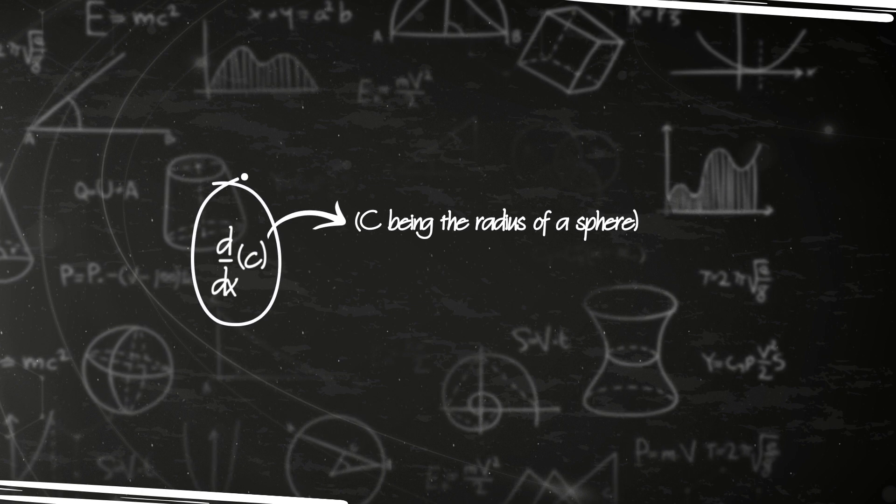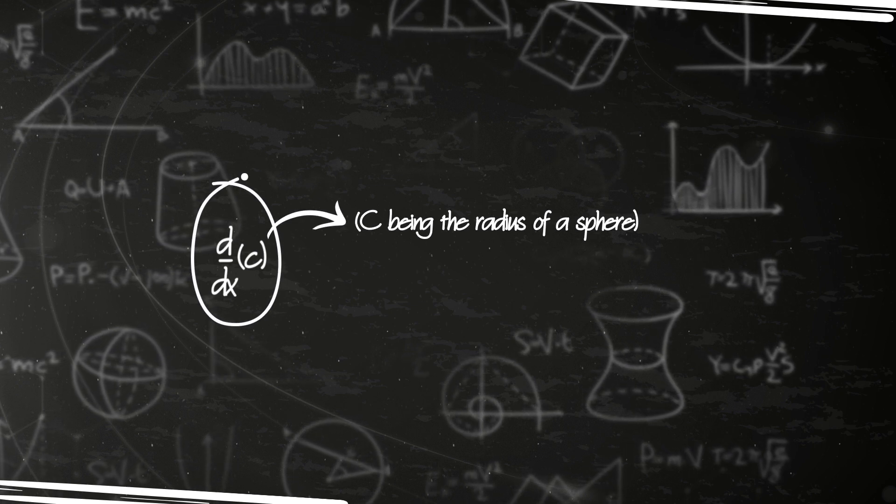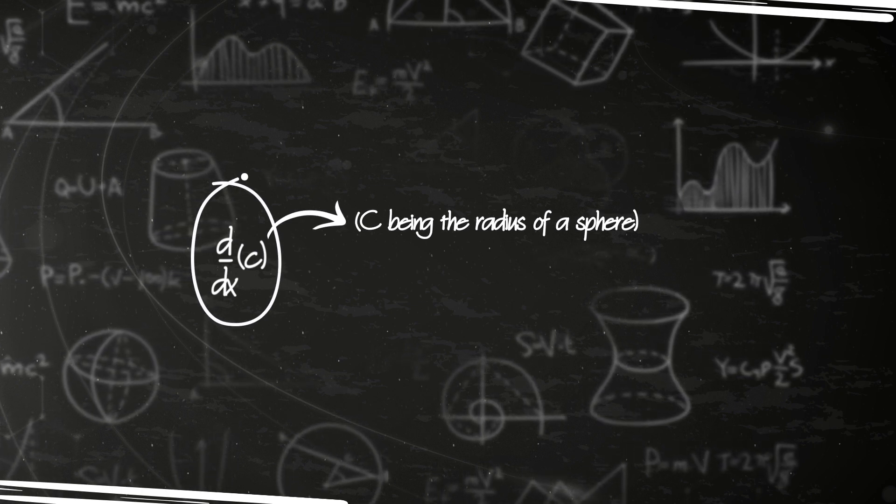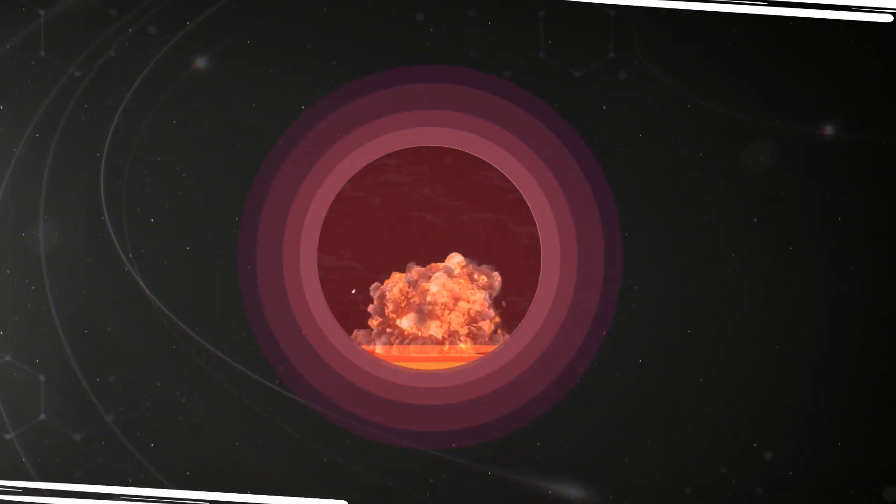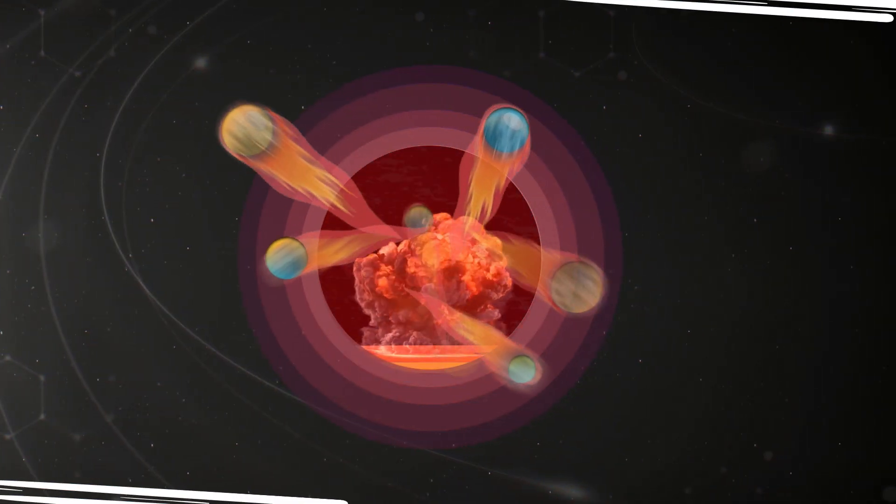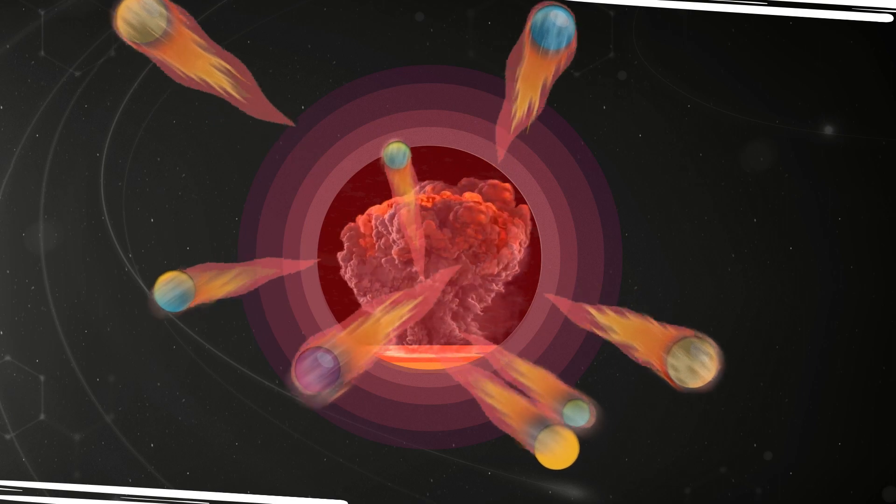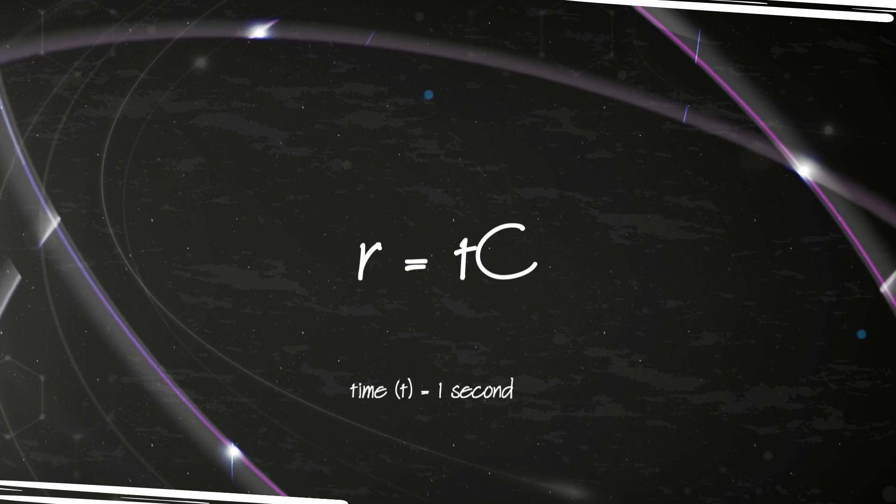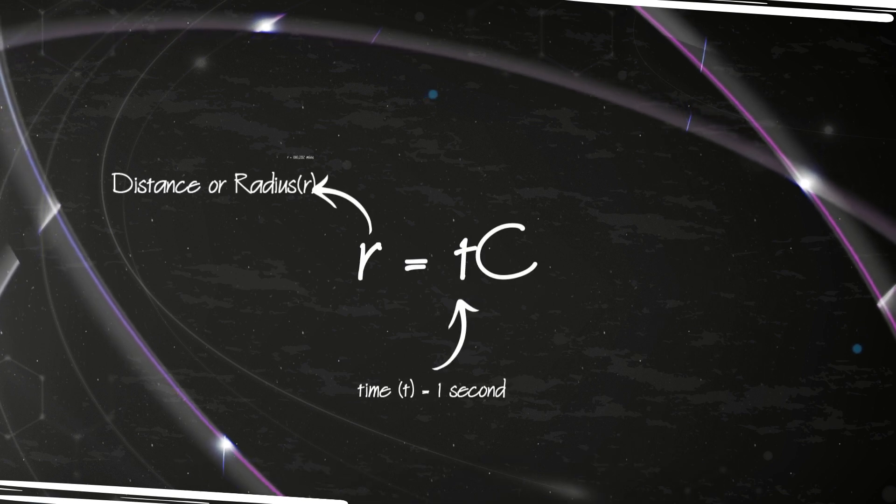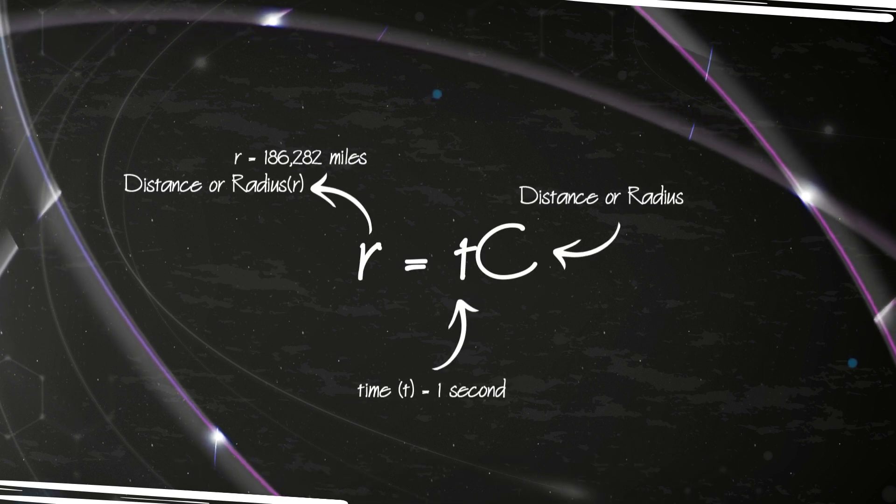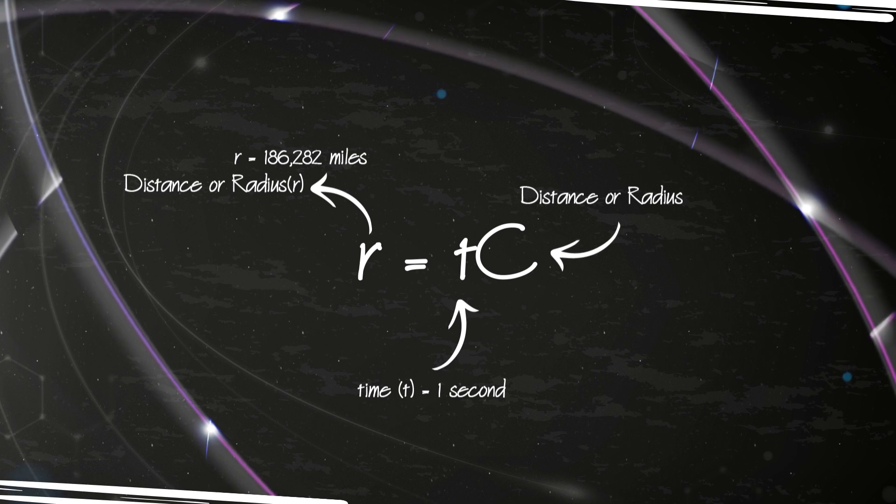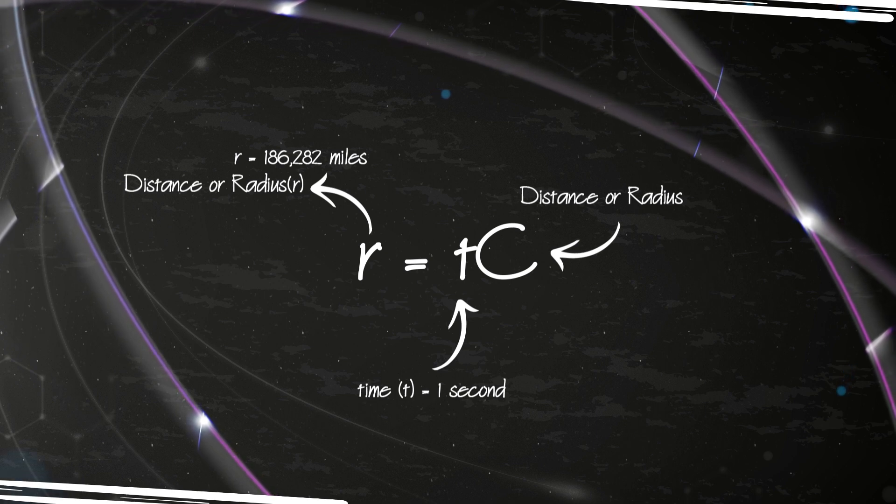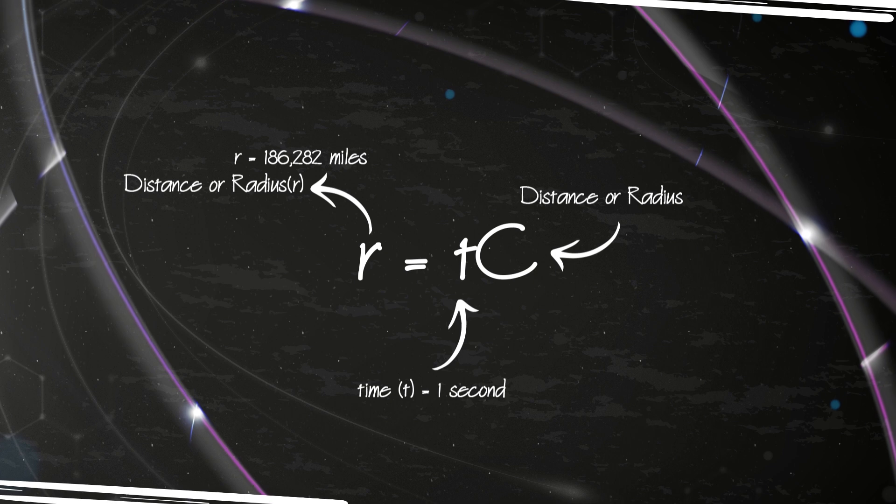Mathematically, the derivative formula uses C to represent distance, C being the radius of a sphere, using the speed of light to measure how far a photon travels from the explosion's center to a spot on the sphere's surface. Since photons move with light speed, this distance, or the radius r, is r equals tc. In time, time t equals one second, r equals 186,282 miles.